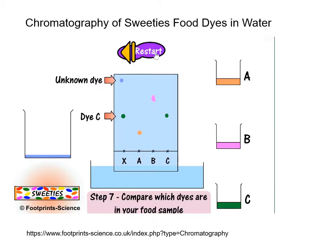When the chromatograph is complete, we identify which dyes are present by looking at how far the dyes have traveled up the paper. We can see that our unknown X contains dye C — they are at the same position — and there is also an unknown dye that doesn't match any of the other dyes.